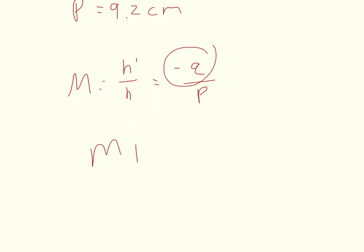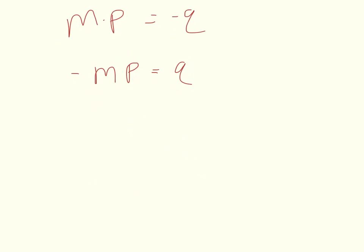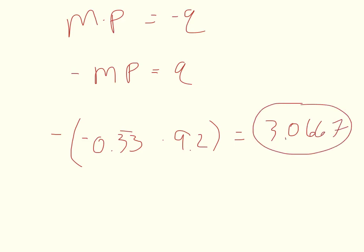So m times p, the magnification times the object placement, is equal to negative q. And I just multiply by negative one, so negative mp equals q. So in my particular situation, I have negative times m, which is negative 0.33 repeating, and that's multiplied by p, which is 9.2. That should equal q. Well, I have a negative times a negative, that's going to give me a positive. q equals positive 3.0667. And since q is positive, it means it's a real image and it's in front of the mirror. So essentially it's not behind the plane of the mirror.